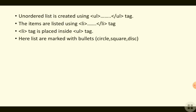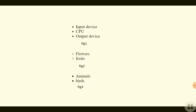Bullets are of three types: circle, square, and disc. Let us see an example of how the unordered list looks. Here you can see three figures — the three types of unordered lists. In figure one, the bullets are in the form of disc. In figure two, the bullets are of type circle. In figure three, the bullets are of type square.